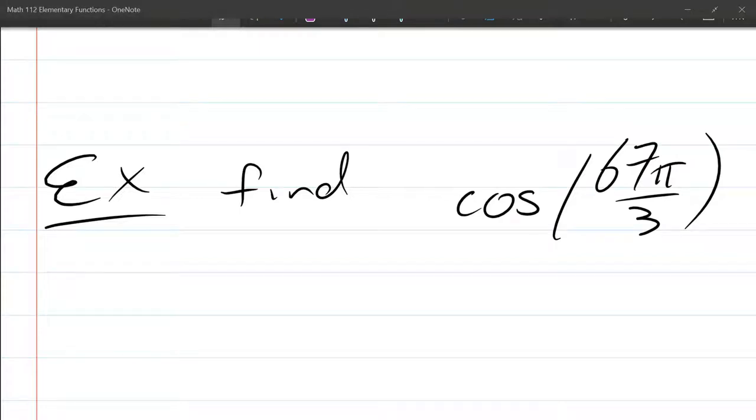We have a very similar problem here. We're going to be looking for cosine of 67π over 3. Now this problem has a positive angle, so I don't need to even think about even odd properties right here.